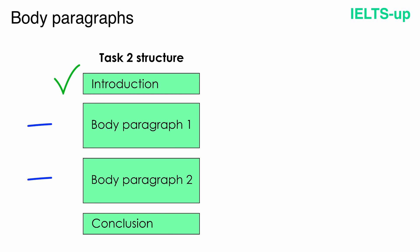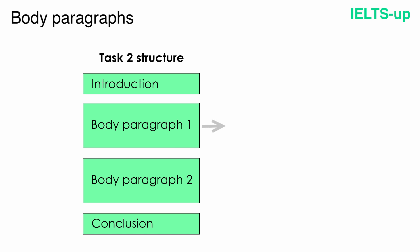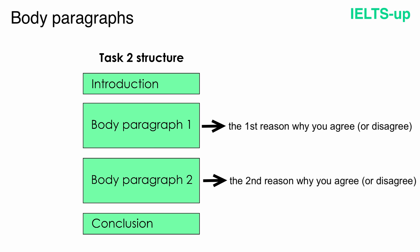Now we move on to the body paragraphs. For agree-disagree questions, it's good to structure your body paragraphs in the following way. In body paragraph 1, write the first reason why you agree or disagree — your first supporting point. And in body paragraph 2, write the second reason why you agree or disagree — your second supporting point.